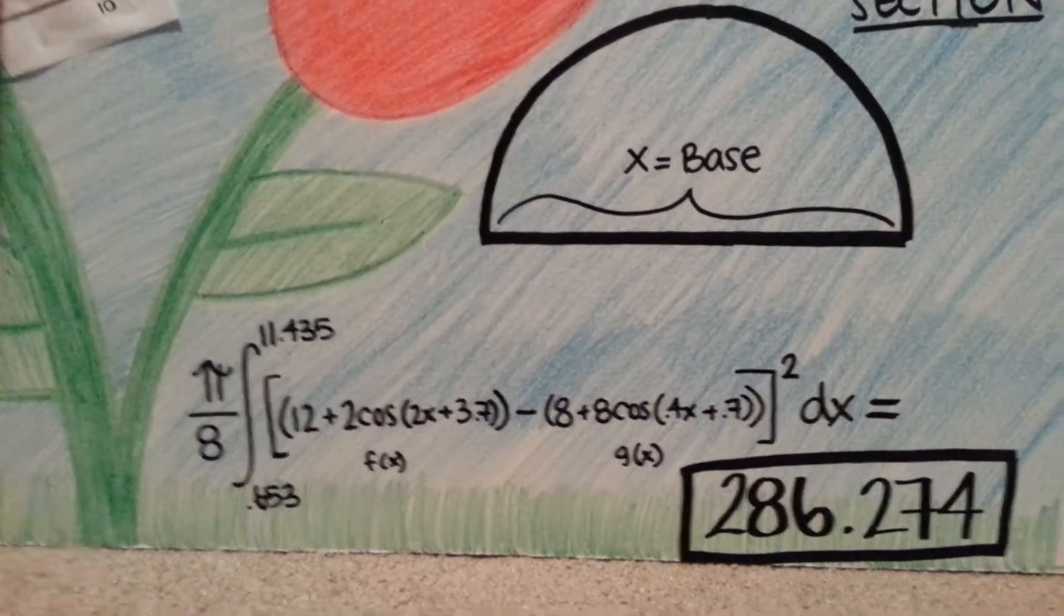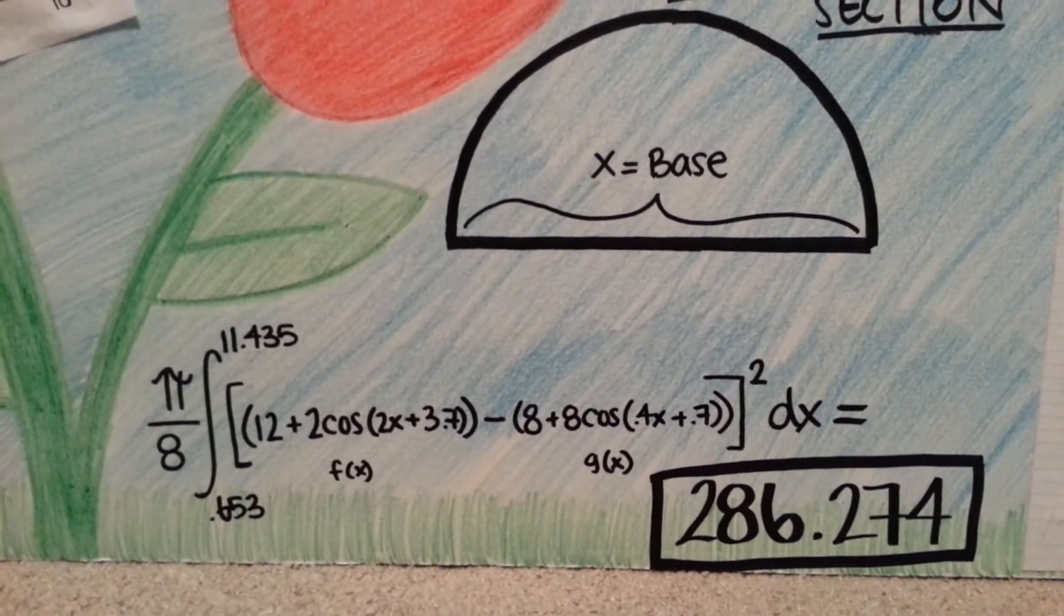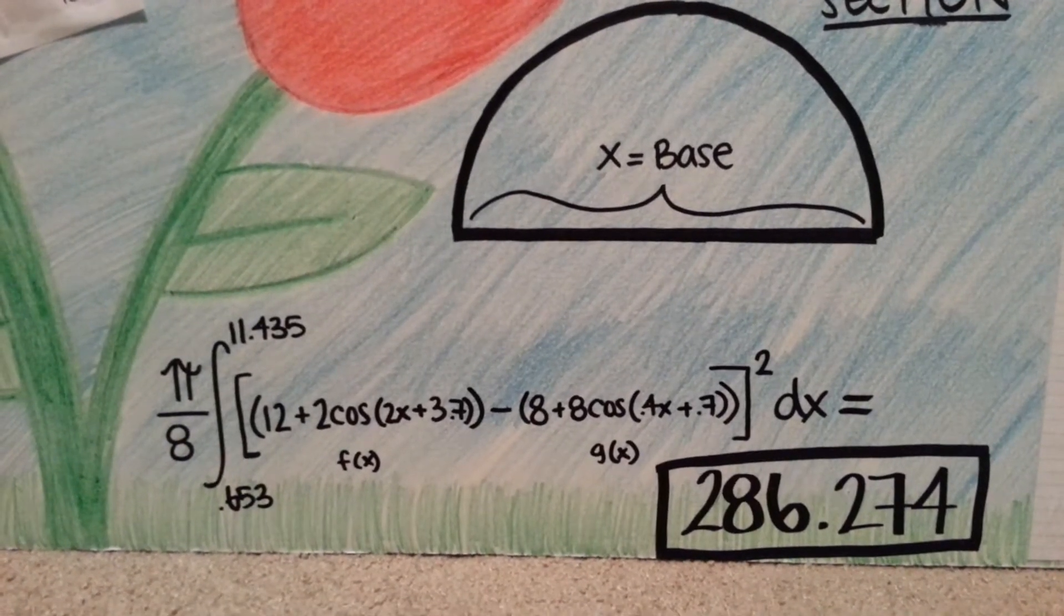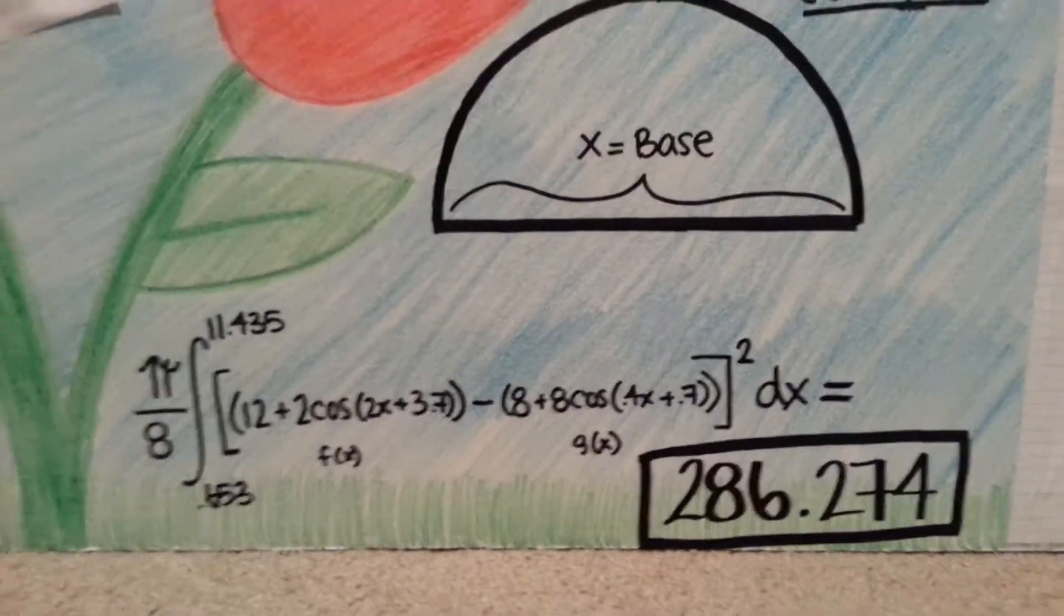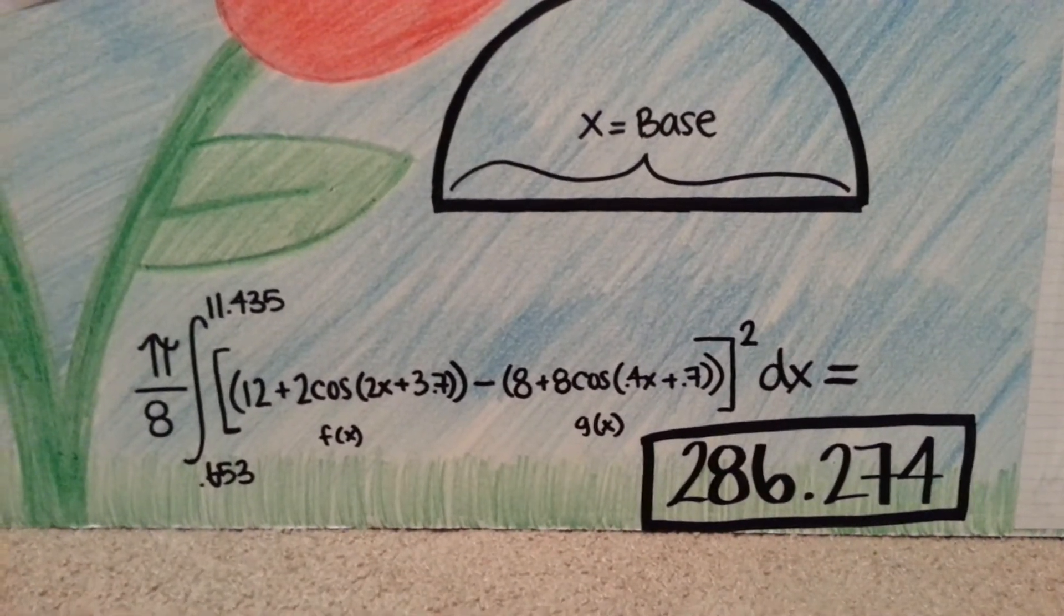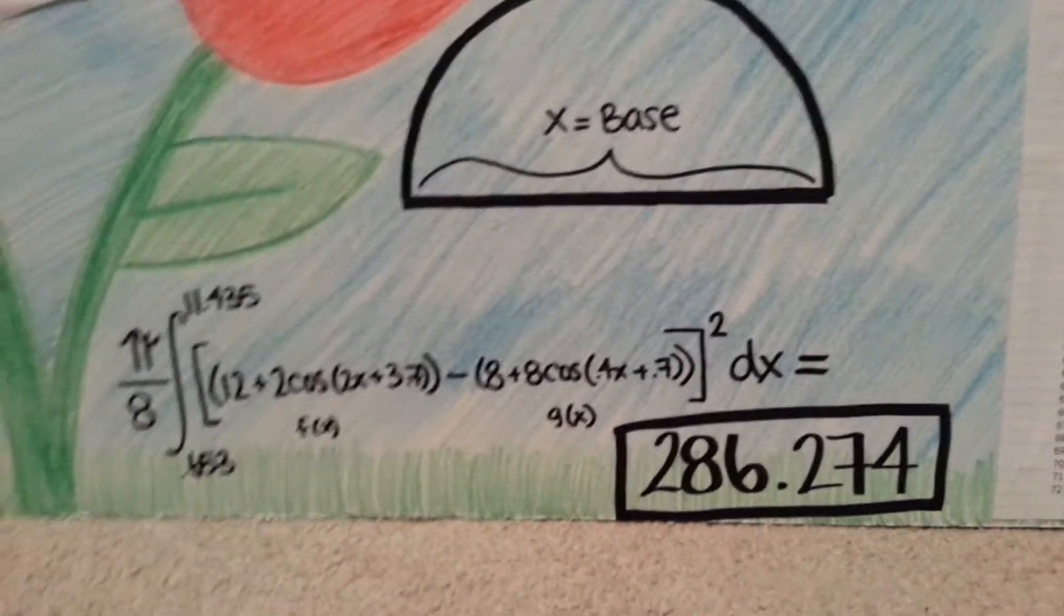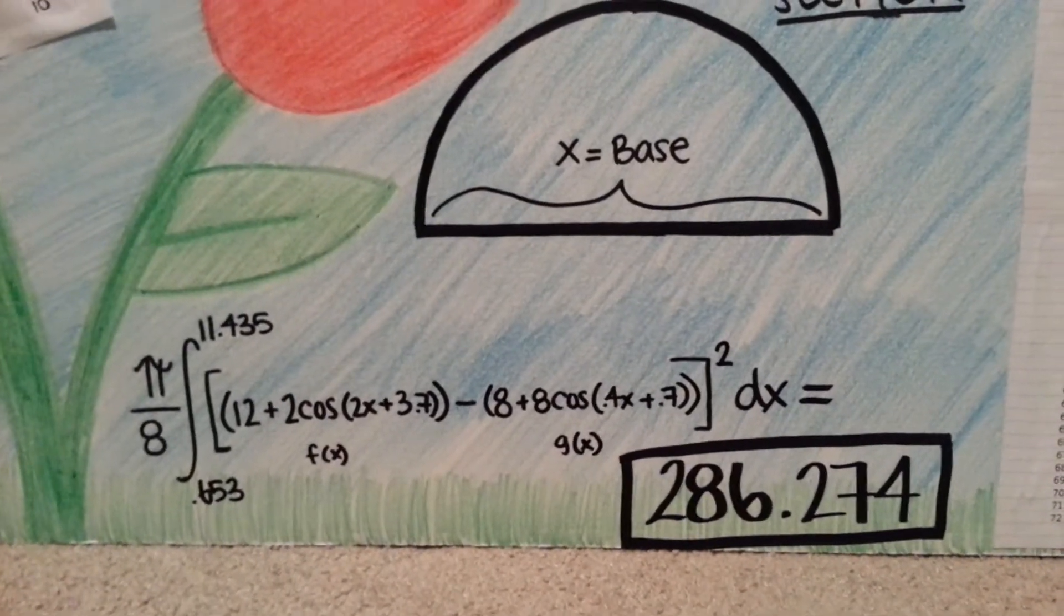And that's actually not an exact integral. When I used my calculator, I brought it out to six decimal places just to get a little bit more of an accurate answer. But after I integrated it, I multiplied it by pi over 8, and the answer I got was 286.274.